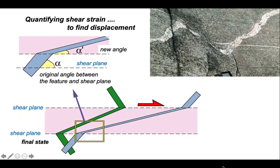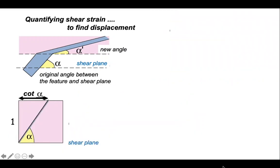Let's set up some trigonometry. On this diagram, the shear plane is horizontal, and we're saying that our original marker makes an angle alpha to the shear plane. If we set this box up as a unit box, then that distance along the top is the cotangent of alpha.